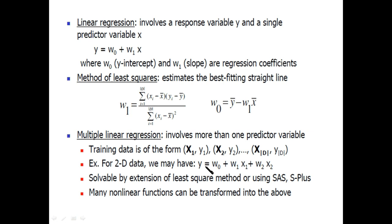This is the equation of multiple linear regression: Y is equal to w0 plus w1x1 plus w2... This is the number of features. We can solve multiple linear regression using the principle of least squares.